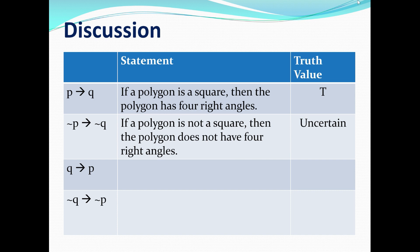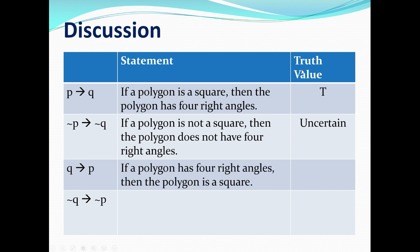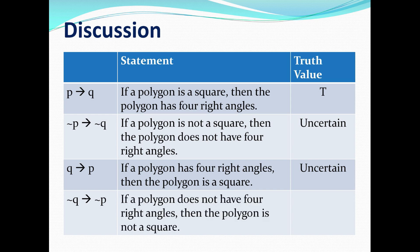For if Q then P: if a polygon has four right angles, then the polygon is a square. That case is very similar to the previous one — if a polygon has four right angles, it doesn't have to be a square; it can be a rectangle. So the truth value is still uncertain. For the last statement, if not Q then not P: if a polygon does not have four right angles, then the polygon is not a square. If the polygon does not have four right angles, it obviously cannot be a square. So that statement is true.